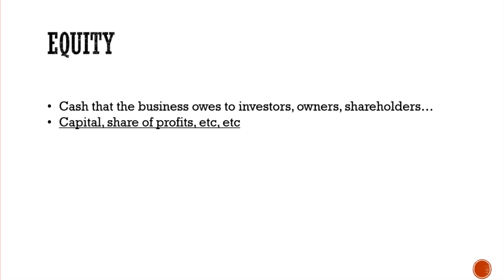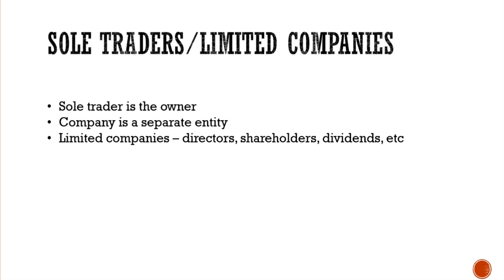The last thing we're going to look at is sole traders versus limited companies. A sole trader is generally a very small business owned by one person — that person is the business and is fully liable for it. A limited company, by contrast, is a separate legal entity that can have directors, shareholders, and pay dividends. A sole trader cannot have directors, shareholders, or dividends; its organization is much simpler compared to a limited company, and there will be another course in future that covers limited companies in detail.